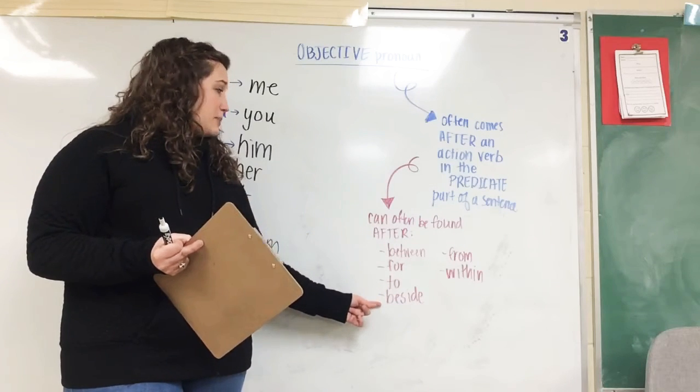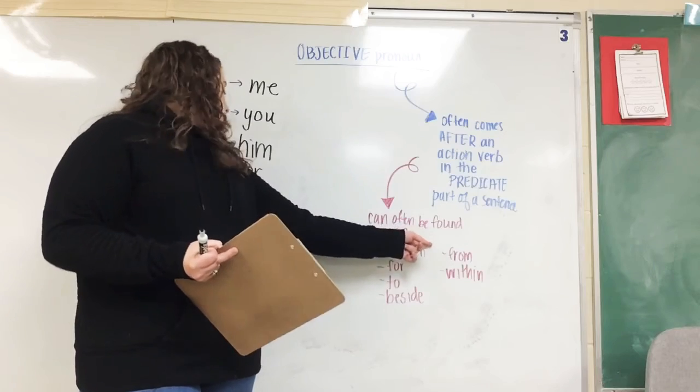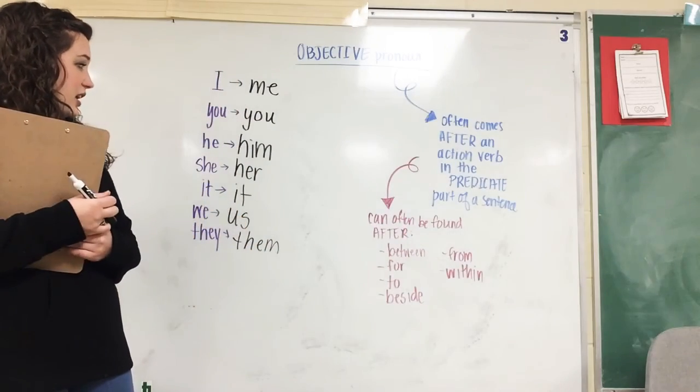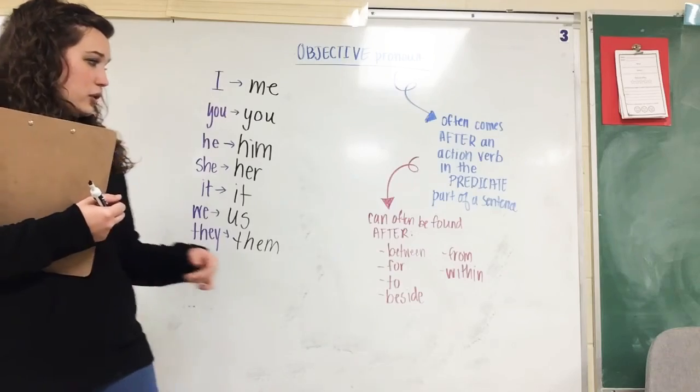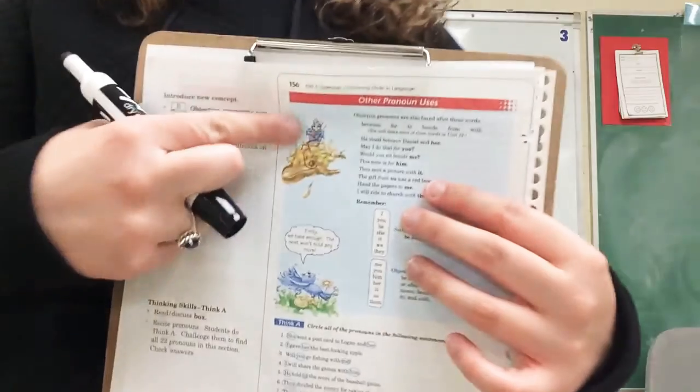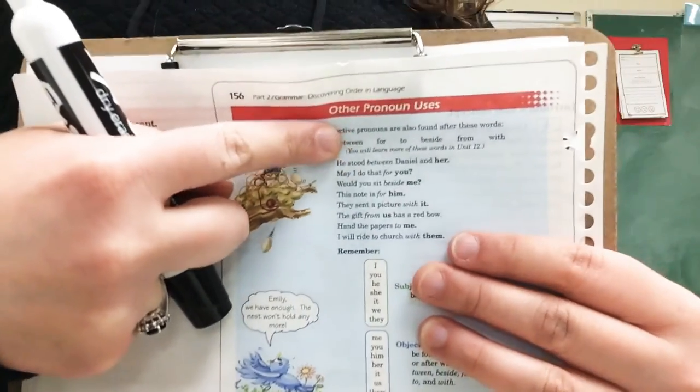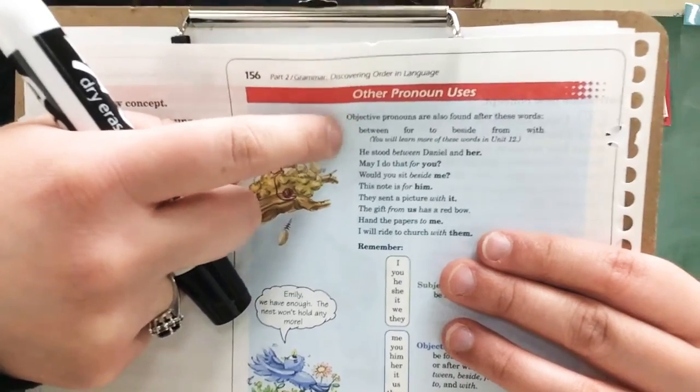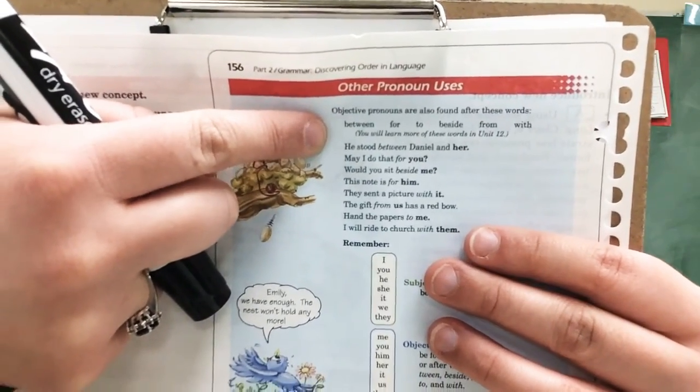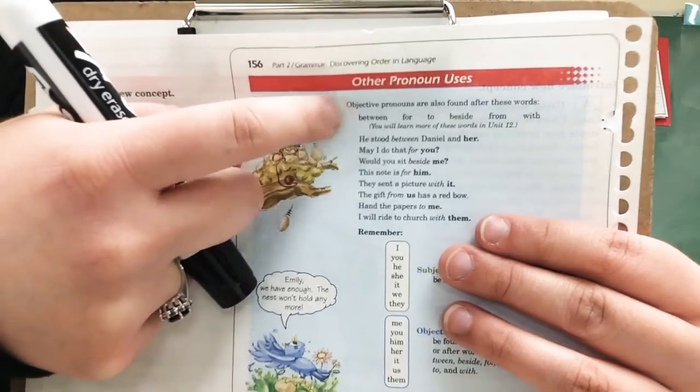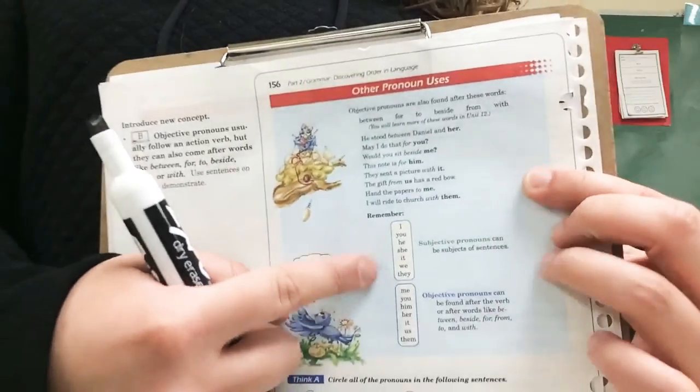Between, for, to, beside, from, within. Okay, oftentimes those will be objective pronouns. Please sit between us so that we do not argue. That is for him. Please give that book to her. The drink is beside you. Please take it from me. It is within you to do your best. Okay, so at the top of—there's other—on your right here, this line right here, okay, below the red bar, I want you to star that and circle those because you need to know that those six words are also with objective pronouns as well as action verbs.